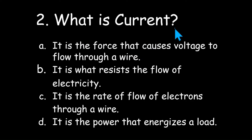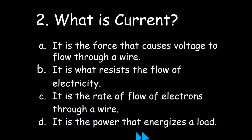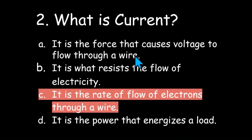What is current? Is it the force that causes voltage to flow through a wire? Is it what resists the flow of electricity? Is it the rate of flow of electrons through a wire? Or is it the power that energizes a load? Current is the rate of flow of electrons through a wire and is the result of that electromotive force called voltage.